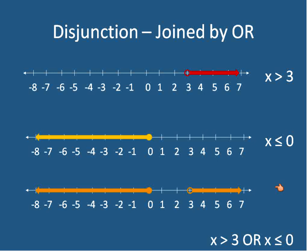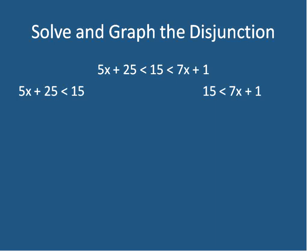So that's basically how disjunctions and conjunctions work. Let's show how to actually solve and graph a disjunction. You'll get a question that looks like this: 5x + 25 < 15 < 7x + 1. The way that we would set this up is we would set it up as two inequalities. I've taken just the first part — 5x + 25 < 15 — and put that over here. Then I've put the second inequality, 15 < 7x + 1, over here. I'm going to solve these two separately, then I'm going to graph them.